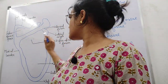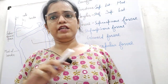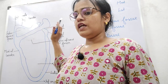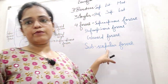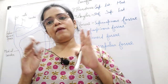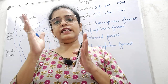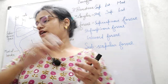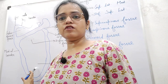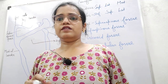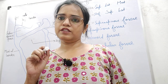Another fossa is the glenoid fossa. It is a shallow cavity for articulation. The next fossa we have is the subscapular fossa. Subscapular fossa is basically located on the costal surface, that is the anterior surface, and the subscapularis muscle arises from here.